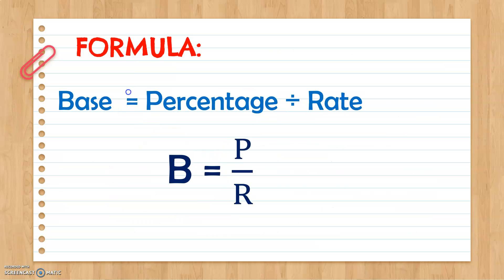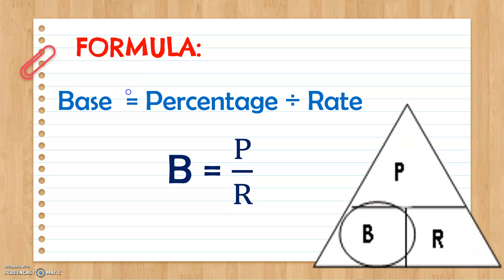For us to find the base, the formula we will use is: Base equals Percentage divided by Rate. To easily remember this formula, we may use our triangular figure where P is on top and B and R are at the bottom. Since B is missing, we focus on percentage and rate. Percentage is on top of rate, therefore we divide.